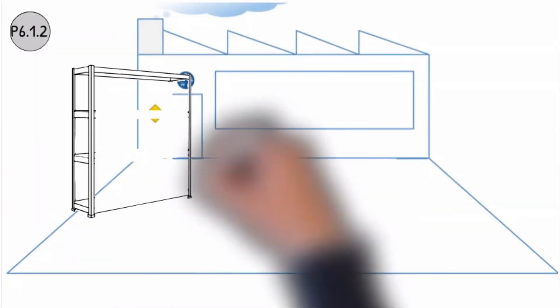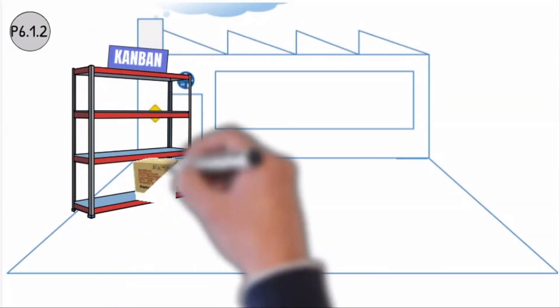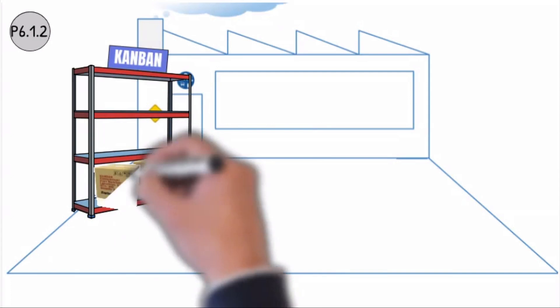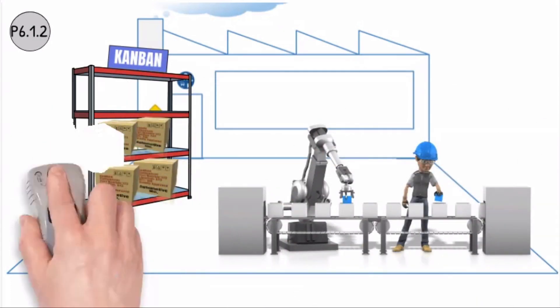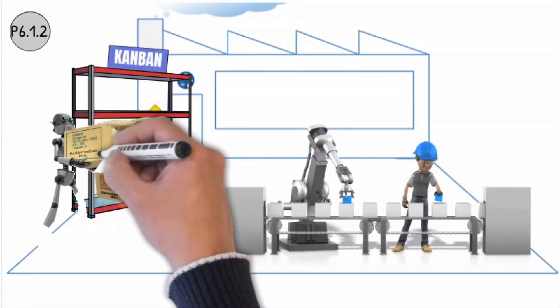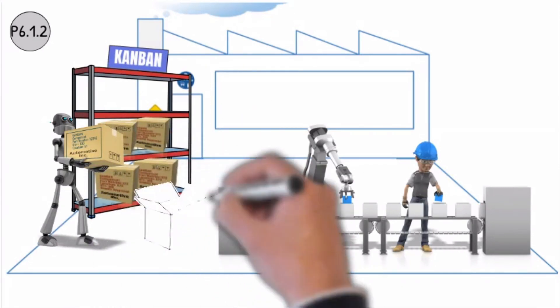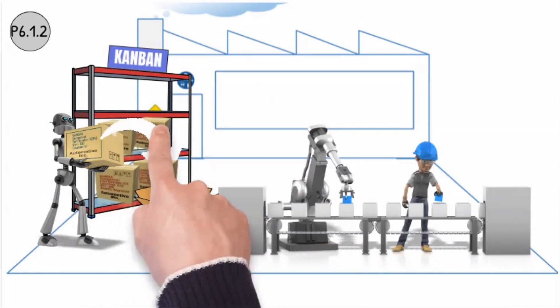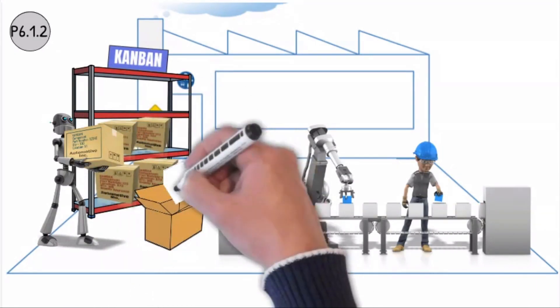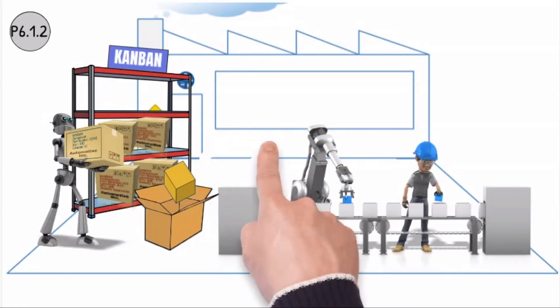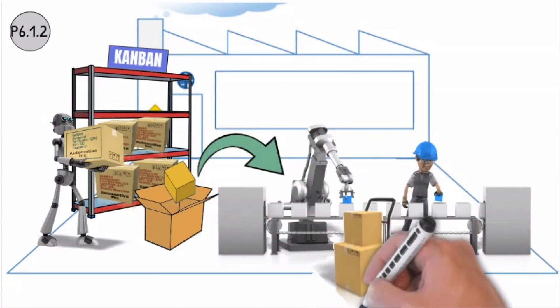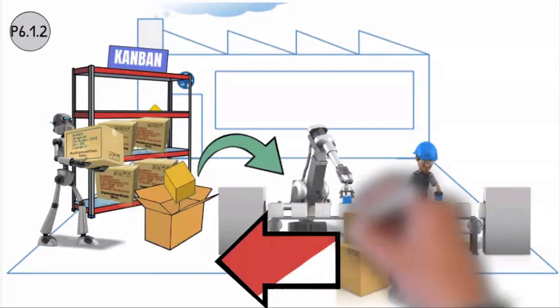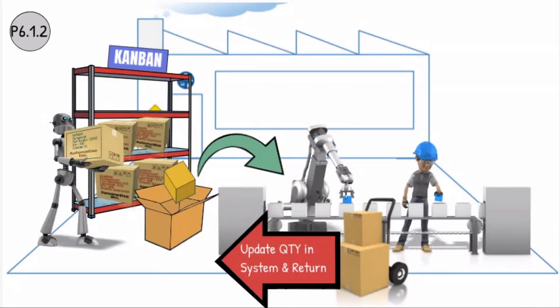The components must be available at the correct storage area and workstations. At the workplace, the components are provided just in time, taking into account the Kanban quantity and lot size and respecting FIFO. After order completion, the quantity and identification of surplus components have to be controlled.